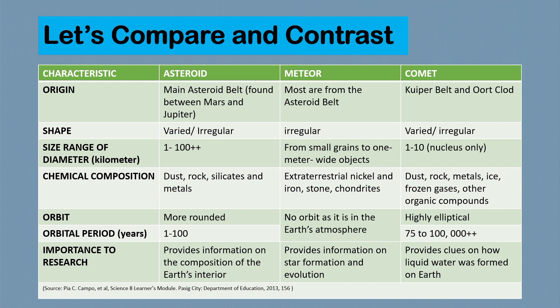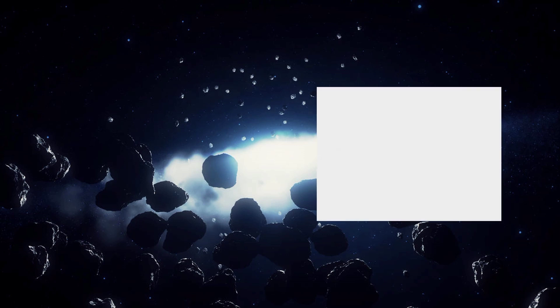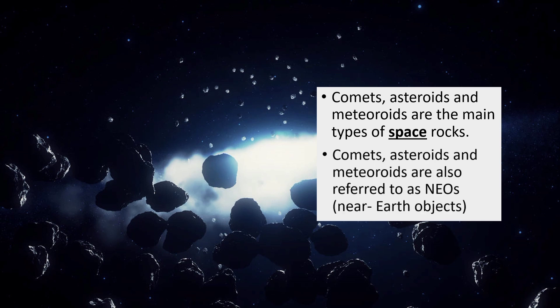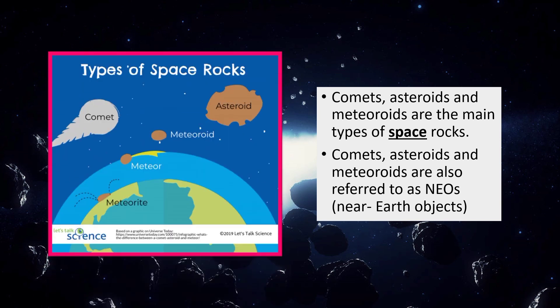I hope the table was able to help you better understand the lesson. To summarize what we have discussed today, remember that comets, asteroids, and meteoroids are the main types of space rocks, meaning they are located in outer space. Comets, asteroids, and meteoroids are sometimes referred to as NEOs or near-Earth objects. As shown in the diagram, comets, meteoroids, and asteroids are in outer space. A meteor is what it's called once it reaches the atmosphere of the Earth, and it is a meteorite if it reaches the surface of the Earth.